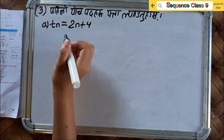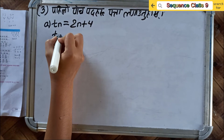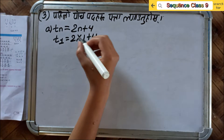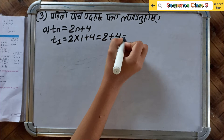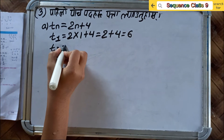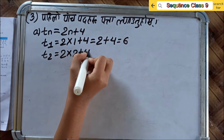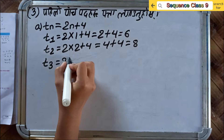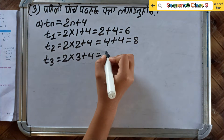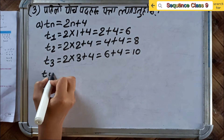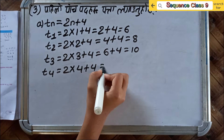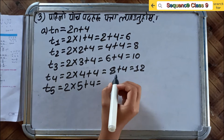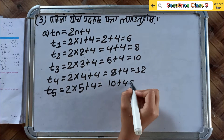5 is equal to 5. 2 plus 4 is equal to 6. 1 minus 4 is equal to 4. 2 plus 4 is equal to 8. T3 is equal to 2 into 3 plus 4. T4 is equal to 2 into 4 plus 4. T5 is equal to 2 into 5 plus 4, which is 10 plus 4, equal to 14.